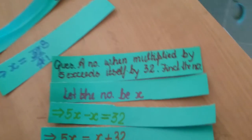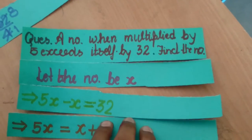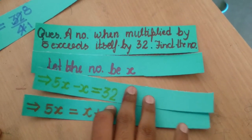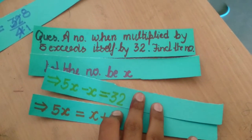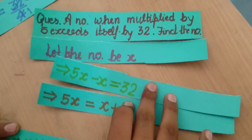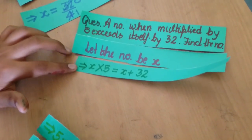The question is: a number when multiplied by 5 exceeds itself by 32. Find the number. A student has the number and is trying to figure out what the next step will be.